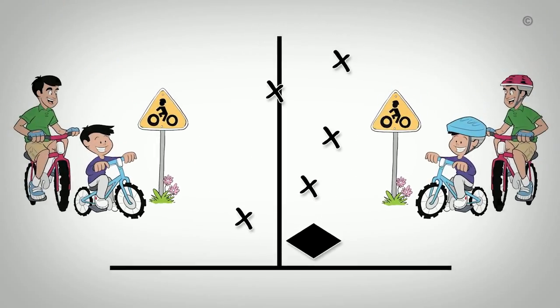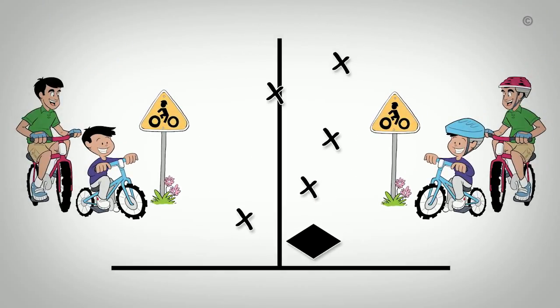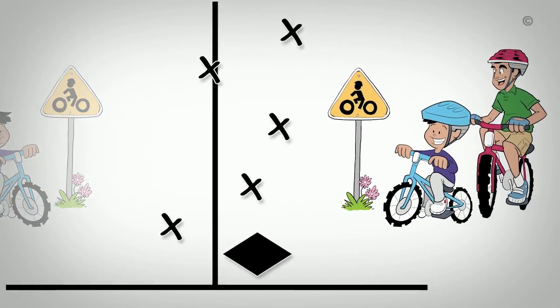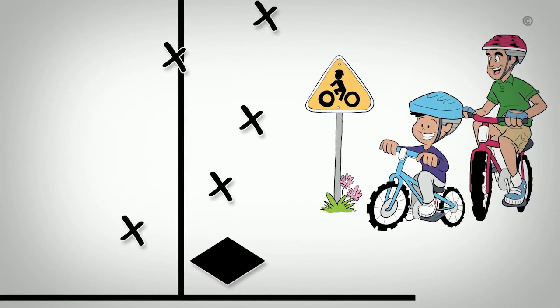In our scenario, where we are looking at the effectiveness of interventions to increase bicycle helmet wearing, we can conclude, based on where the diamond is situated on the forest plot, that those exposed to the intervention had a greater odds of wearing bicycle helmets than those not exposed to the intervention, meaning the intervention appears to have had a positive effect.